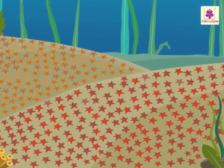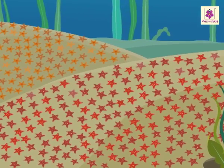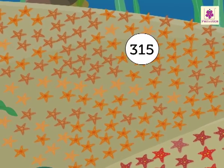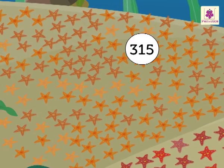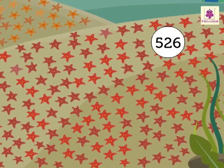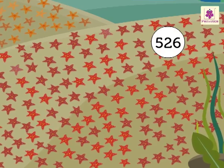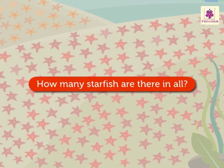Can you see those colorful starfish? There are 315 orange starfish and 526 red starfish. Let us see how many starfish are there in all.